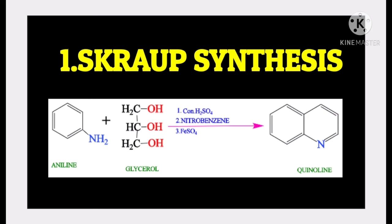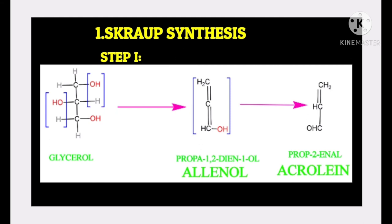Skraup synthesis occurs in two steps. In the first step, glycerol loses two water molecules and forms acrolein. The IUPAC name of acrolein is prop-2-enal.